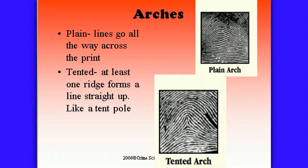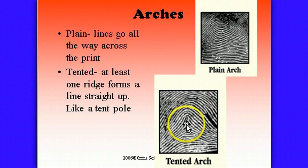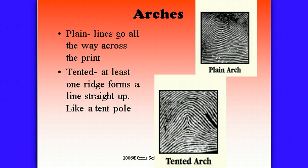The next type of fingerprint pattern we talked about was the arch, and there's what's called a plain arch and a tented arch. When you think of a tent, think of those traditional style tents with a main center pole. The tented arch goes up, but you can see an area right in the center where ridges extend up but don't come back down — from the right-hand side, it goes up and then stops. The regular plain arch just looks like a nice little mound or hill, and all the ridges go all the way across the print, nice and neat.